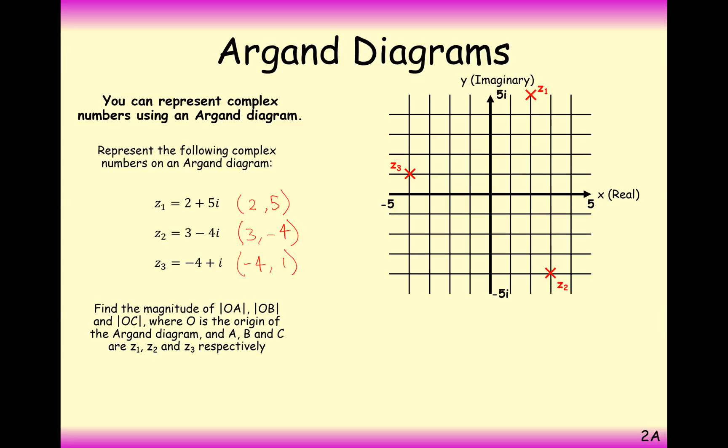So on top of this, we introduce the word magnitude. So find the magnitude of OA. Now O, you'll be familiar with this from GCSE. O is always the origin coordinate, the centre point 0, 0.